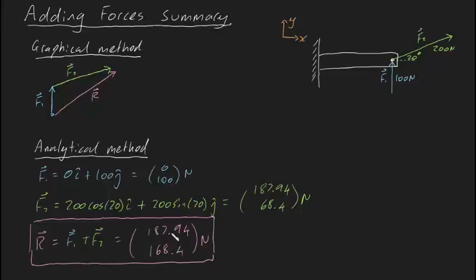But to give you a little bit of intuition, let's draw our resultant force vector again like this. This is our resultant force vector like this. This shows that the horizontal component is 187.94 newtons to the right, and 168.4 newtons upwards. That's what we've just shown.